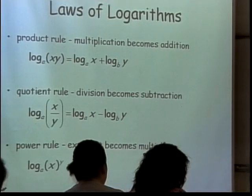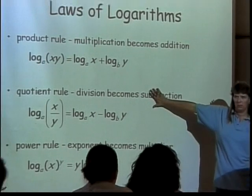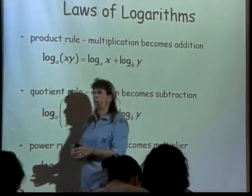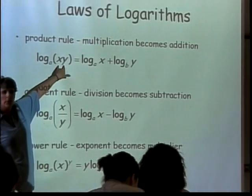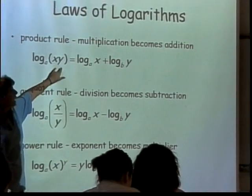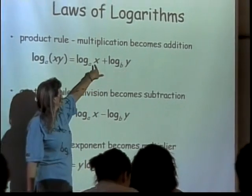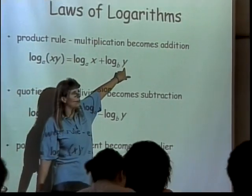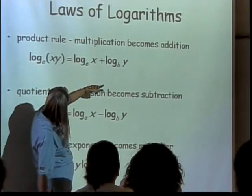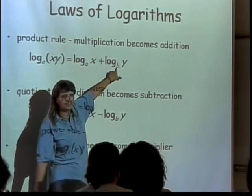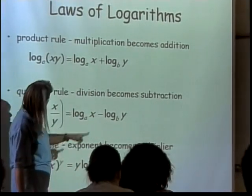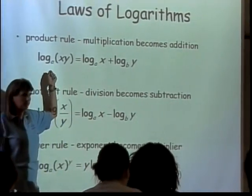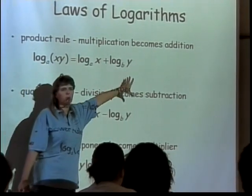My question to the back of the room is can you read these? Everybody can see these because otherwise I'll write them up here. The product rule allows you to take a single logarithm where the argument is multiplied together and break it up into two logarithms where the argument is broken up so the first thing goes after the first logarithm, the second part goes after the second logarithm, and in between your logarithms you have a plus. It also allows you to go backwards, so you can go from one logarithm to two or from two logarithms back to one.